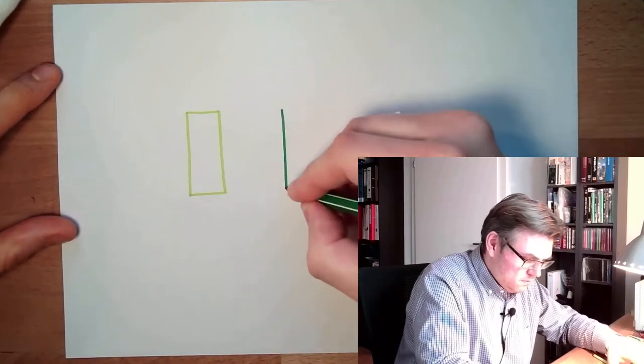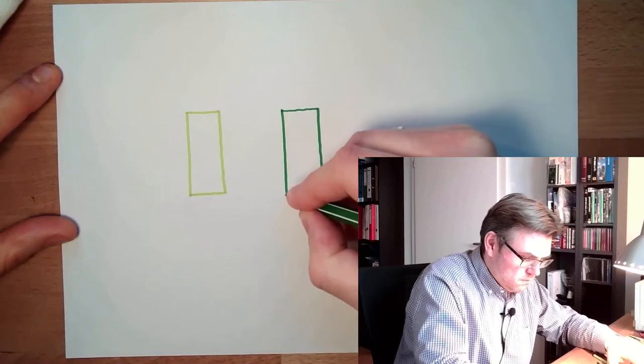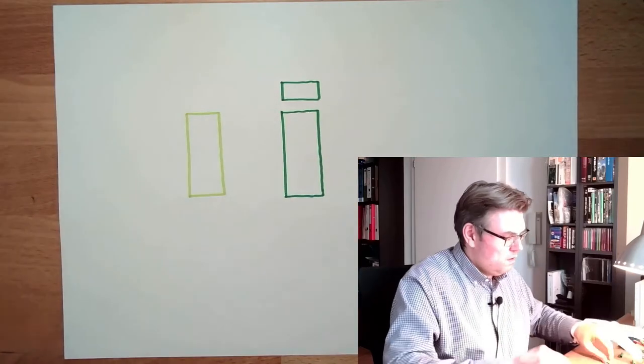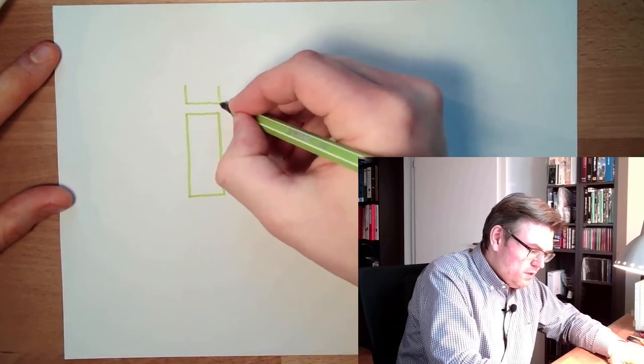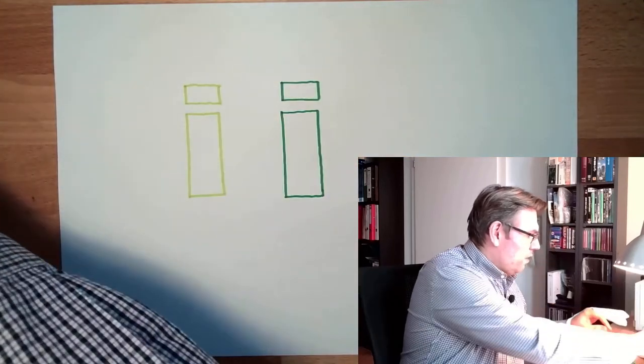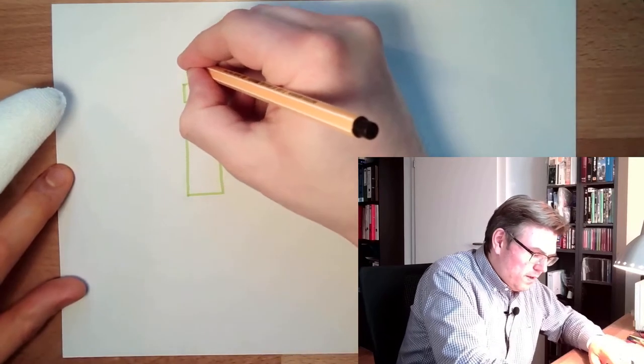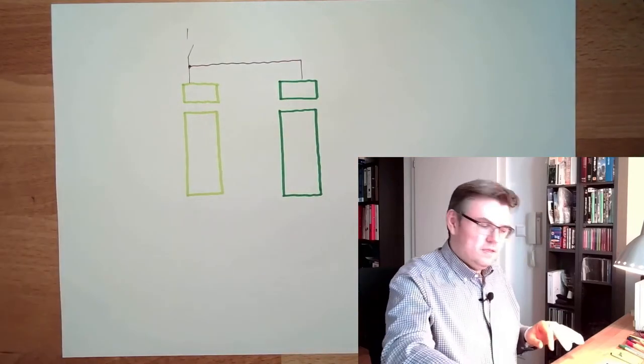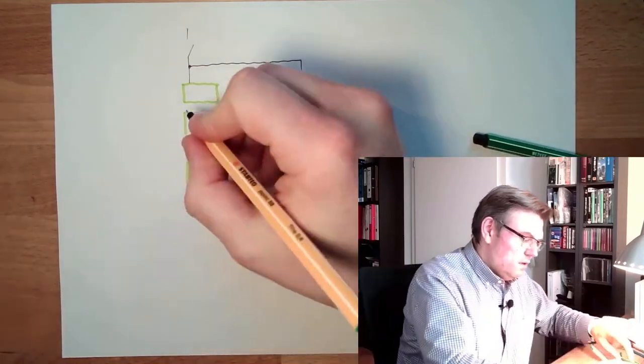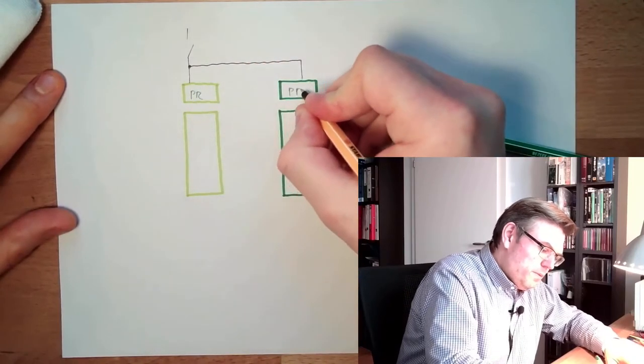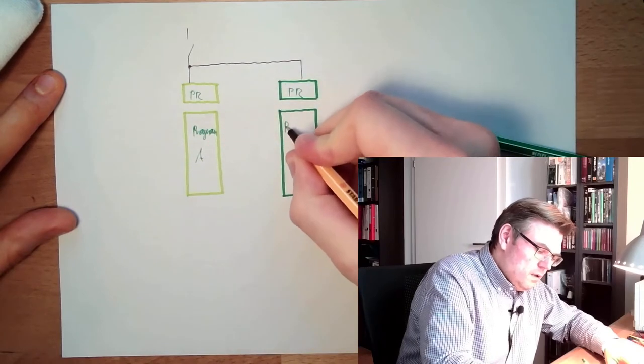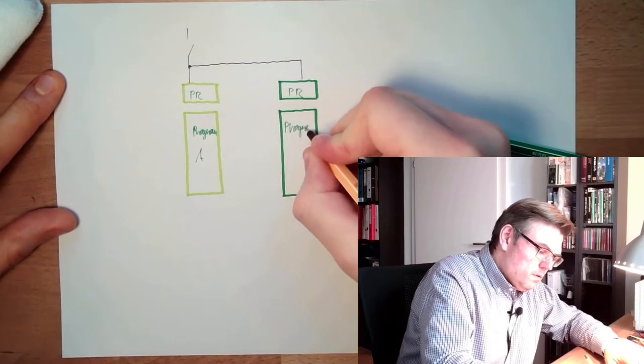They have their own process representation there. They are then connected to the outside world. The outside world might also be connected right on the end. So this here is the process representation. This is program System A. This is program System B.